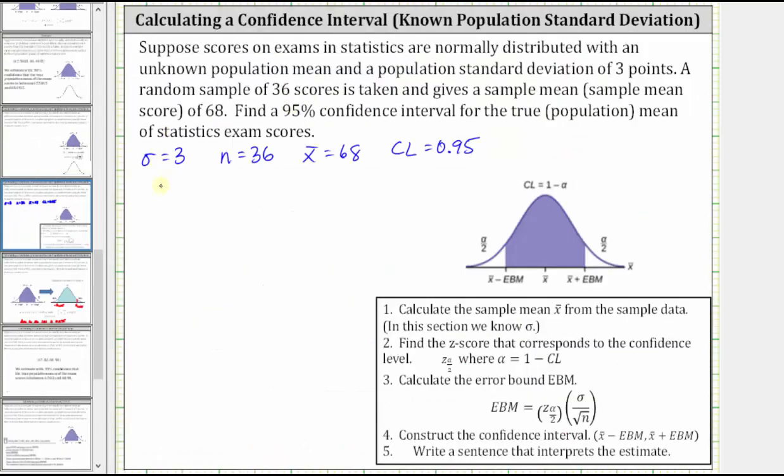So now going back to our work, we know the z-score we need is z sub 0.025, which is approximately 1.96.